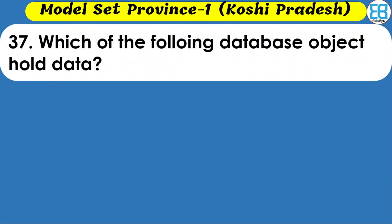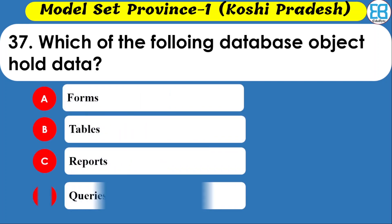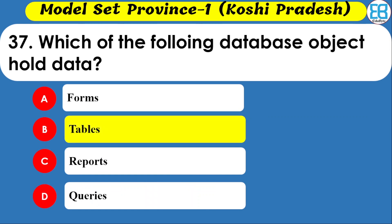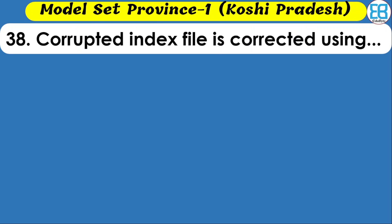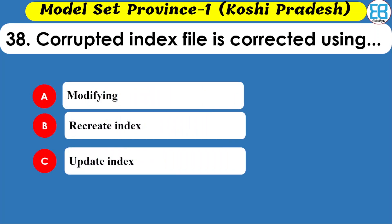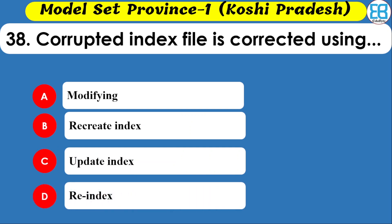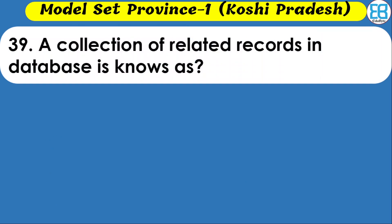Which of the following is a database object? Options are forms, tables, and reports. The correct option is tables. A corrupted index file is corrected by which method? Options are recreate index, update index, and reindex. The correct option is to recreate the index.